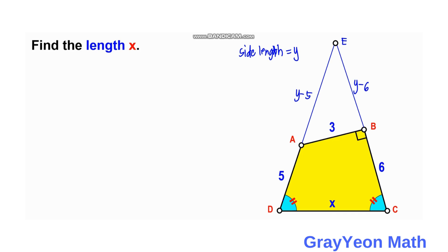Notice that the angle at B is 90 degrees. Since we extended segment BC upward, the angle EBC is 180 degrees, so the angle at E in triangle ABE is also 90 degrees. We now focus on right triangle ABE.